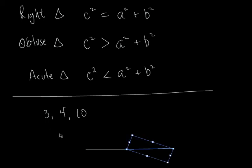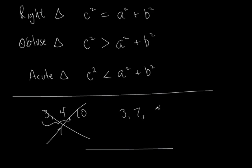The rule is: if you add up the two smaller sides, that sum has to be bigger than the third side. Three plus four is seven, which is less than ten, so it's not even a triangle. If the two smaller sides don't add up to more than the third side, you can't make a triangle — you'd say 'no triangle.' You can't classify it as right, obtuse, or acute.